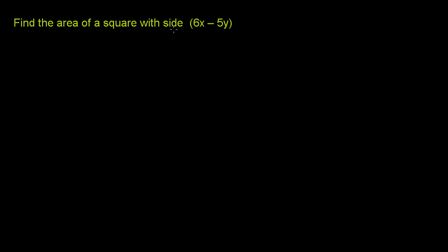Find the area of a square with side 6x minus 5y. So let me draw our square. And all of the sides of a square are going to have the same length.